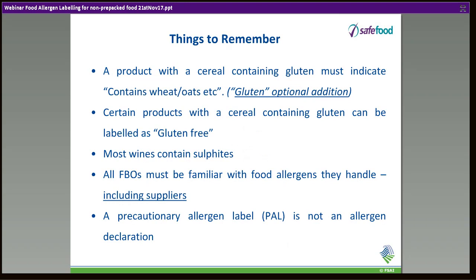Other important things when declaring allergens in written format: you must list the specific cereal — wheat, oats, barley, etc. — not just 'gluten.' You can include gluten in addition, but the primary requirement is 'contains wheat,' 'contains oats,' and so on — gluten alone is not sufficient. Notably, certain products may contain or have added a gluten-containing cereal but can still be labelled gluten-free — for example, oats grown under controlled conditions. For such foods where there's no ingredients list, you could put 'gluten-free.'